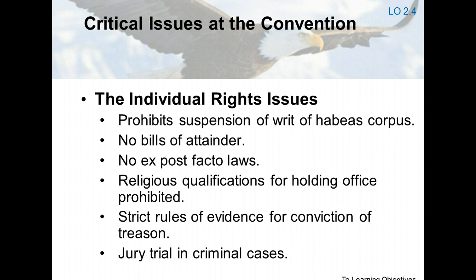The delegates felt that they were constructing a limited government that could not threaten personal freedoms, and most believed that the various states were already doing an adequate job of protecting individual rights. As a result, the Constitution says little about personal freedoms. It does prohibit suspension of the writ of habeas corpus, prohibits bills of attainder and ex post facto laws, prohibits the imposition of religious qualifications for holding office in the national government, narrowly defines treason, outlines strict rules of evidence for conviction of treason, and upholds the right to trial by jury in criminal cases. The absence of specific protections for individual rights led to widespread criticism during the debates over ratification.